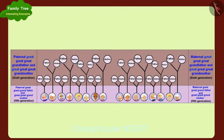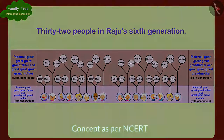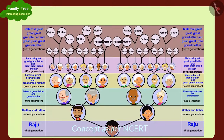In this way, there will be 32 people in Raju's sixth generation. How many great grandfathers and great grandmothers does my father have? Children, can you find the answer to Raju's question?